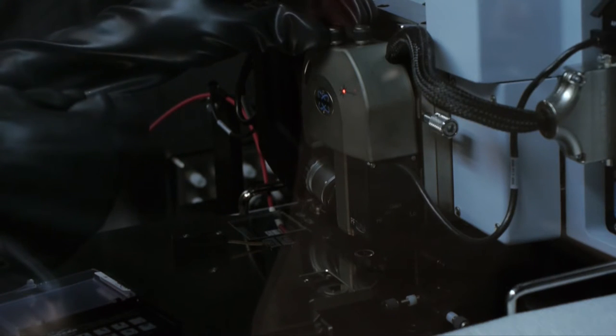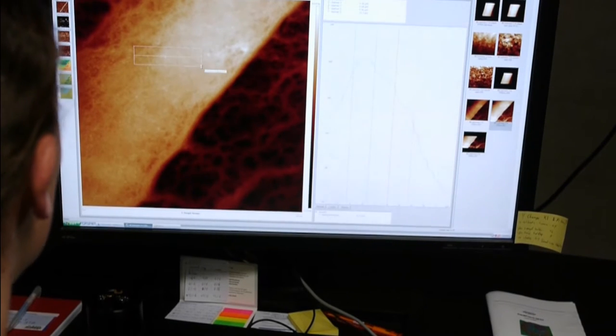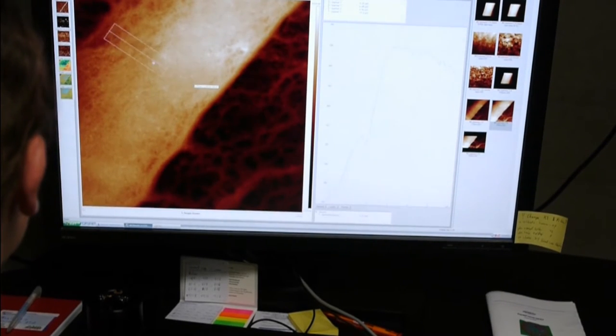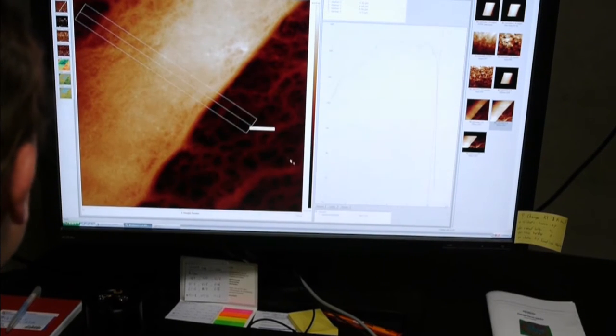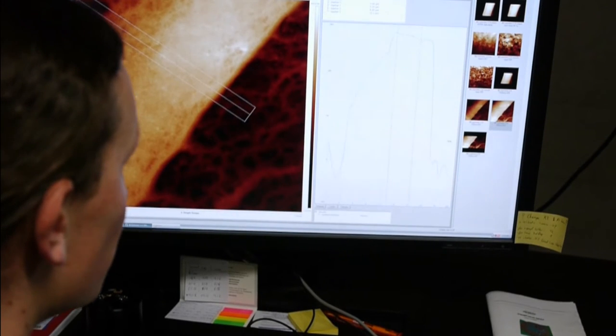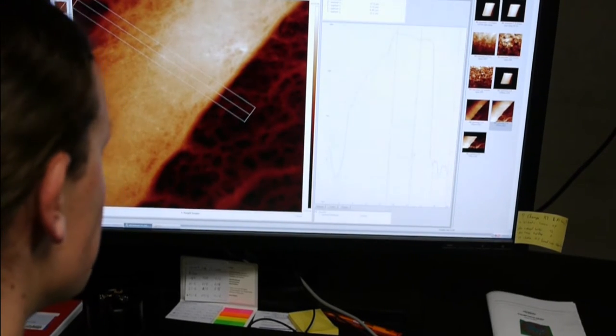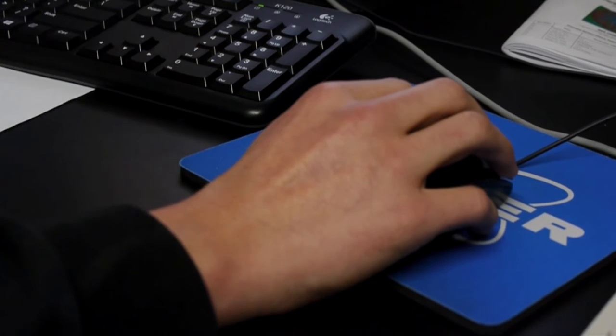When using an atomic force microscope, a needle is passed over the surface of the substrate. Based on the interaction between the measuring needle and the surface, the computer calculates the height of the layers. On the computer, the result is displayed as a layer-height profile. The atomic force microscope measures surface currents and other material properties with very high resolution.